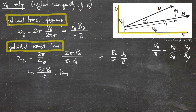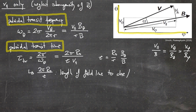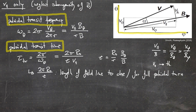This length corresponds to a field line making roughly a full poloidal turn or transit. V_parallel here is approximated by the thermal velocity, assuming thermal equilibrium.